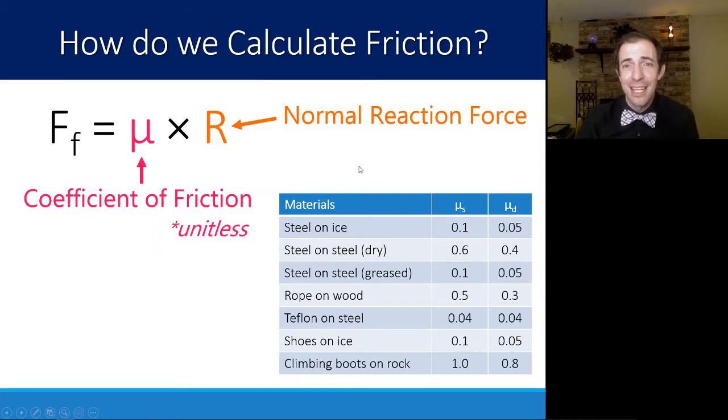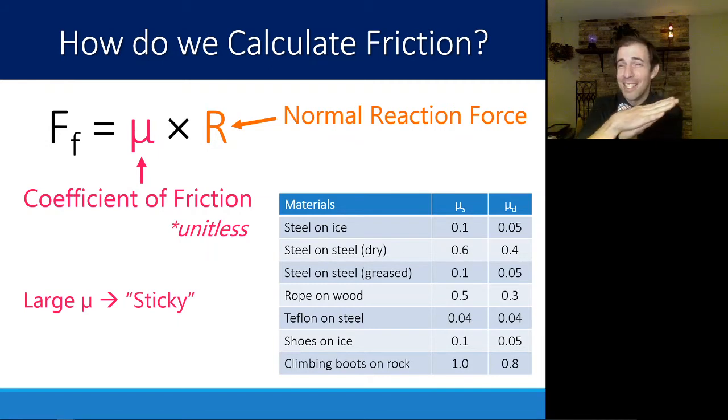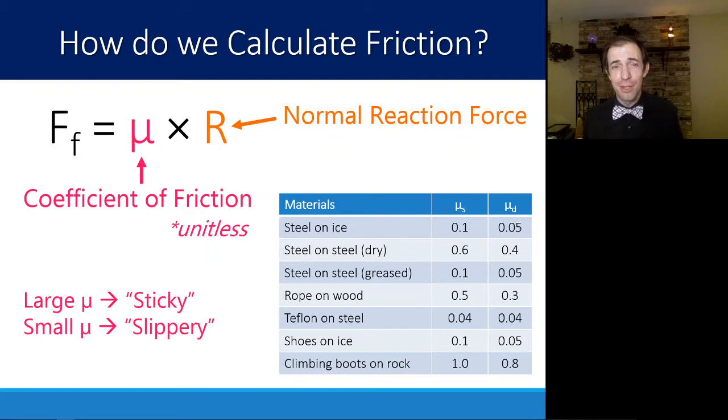It is important that you can conceptually describe this. A large μ, a large coefficient of friction, is what you think of as quote-unquote sticky, surfaces that don't want to go past each other. Whereas a small μ, small coefficient of friction, is slippery, surfaces that slide very easily.